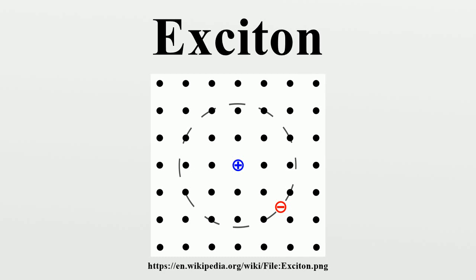In periodic lattices, the properties of an exciton show momentum dependence. The concept of excitons was first proposed by Yakov Frenkel in 1931, when he described the excitation of atoms in a lattice of insulators. He proposed that this excited state would be able to travel in a particle-like fashion through the lattice without the net transfer of charge.